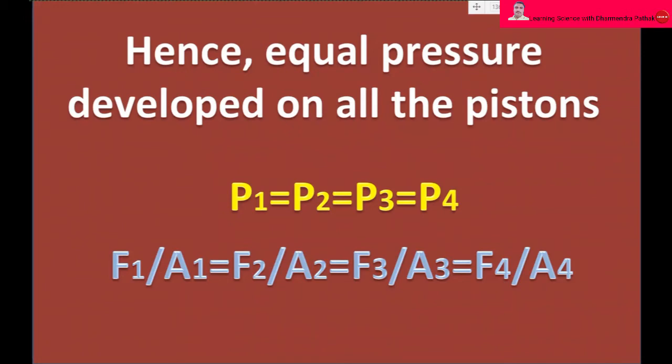Hence, equal pressure developed on all the pistons, which is P1 equal to P2 equal to P3 equal to P4. All the individual pressures are F1 by A1 equal to F2 by A2 equal to F3 by A3 equal to F4 by A4.